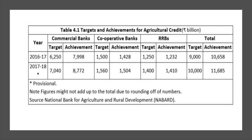This table provides information about the targets and achievements for agricultural credit, sourced from NABARD — the National Bank for Agriculture and Rural Development. As you can see, in 2016-17 and 2017-18, the overall targets for commercial banks, cooperative banks, and regional rural banks were 9,000 and 10,000 crore respectively, and the achievements were 10,658 and 11,685 respectively, which means the targets were achieved each year.